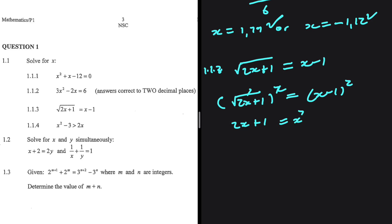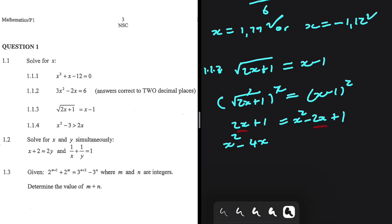x multiplied by x is x squared. x multiplied by minus 1 is minus x. Multiply that by 2 and you get minus 2x. And minus 1 multiplied by minus 1 is plus 1. So we get x squared minus 4x. If you take 2x to the right-hand side, it's minus 2x minus 2x, which is minus 4x. And 1 minus 1 is 0.